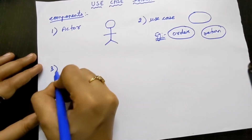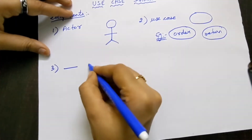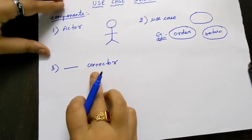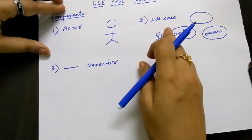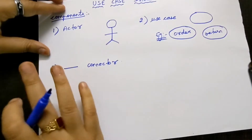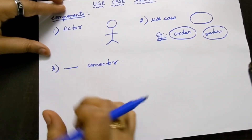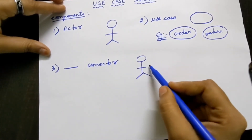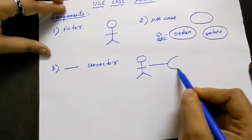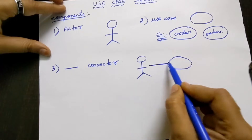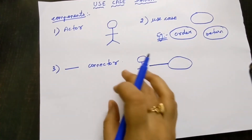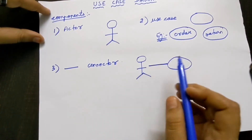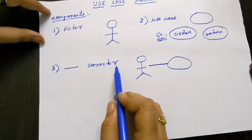The third component is the connector. A connector means connecting the actor and the use case. It is just a line with no arrow mark on either side. We use the connector to link the actor with the use case.